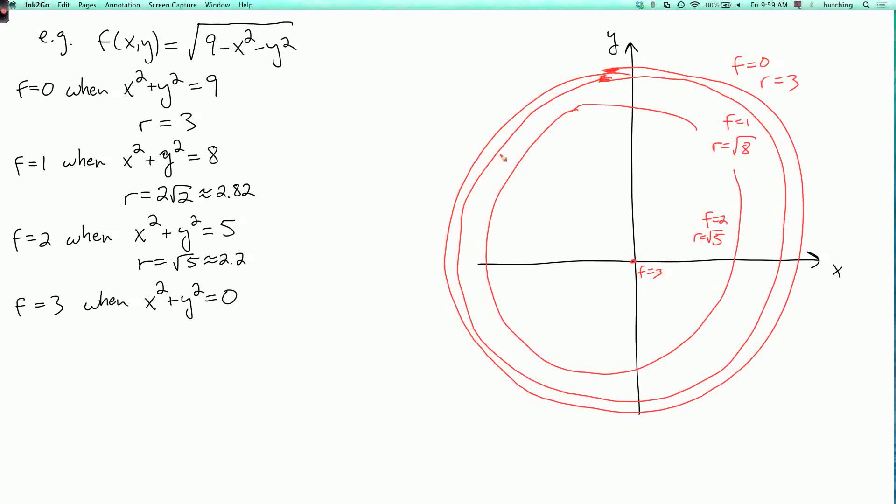Now, the fact that the contour lines, I keep saying contour lines, so the official word is level curves. So these level curves on the outside are quite close together. And then they get further apart. So we could draw some more level curves. Like we could look at where f equals 1 half. So f equals 1 half would be somewhere in between these two. And f equals 2 and a half would be somewhere in between these two. And you see those contour lines, as you move towards the center, are getting further and further apart.